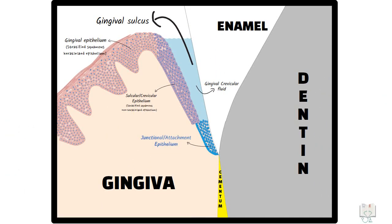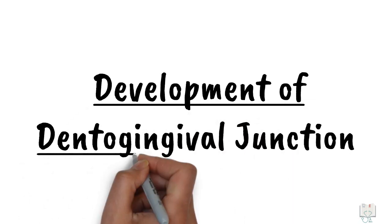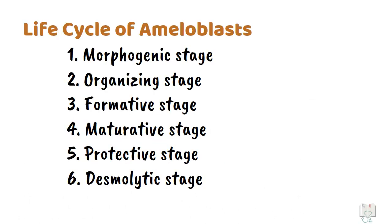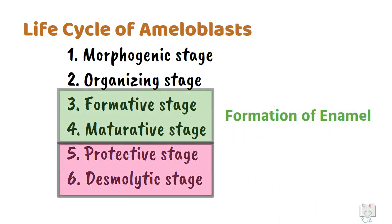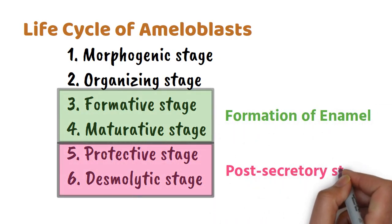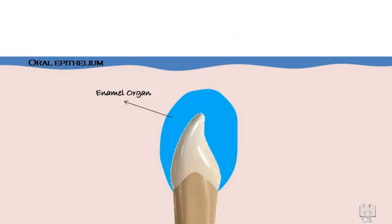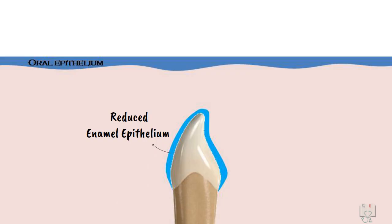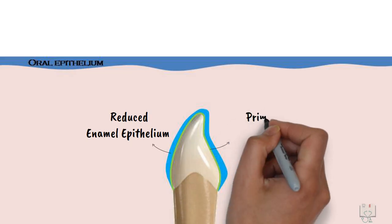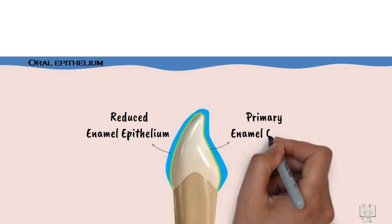Now let us study the development of the dento-gingival junction. During amelogenesis, the ameloblasts after completing the formation of enamel enter the post-secretory stage, during which the entire enamel organ constricts and forms reduced enamel epithelium, which is a 4 to 5 cell layered structure and is attached to the enamel by a basal lamina called primary enamel cuticle.